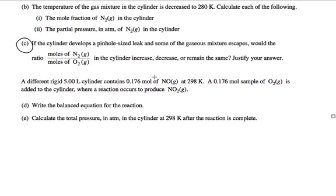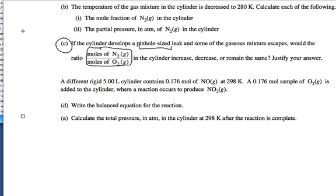So for C it says, if the cylinder develops a pinhole size leak and some of the gas escapes, what would the mole ratio? We calculated the mole ratio in the last problem for each, whether it's N2 or O2. We'll use N2 as a case study. It was 0.875 divided by 1.750, which ended up being 0.50.